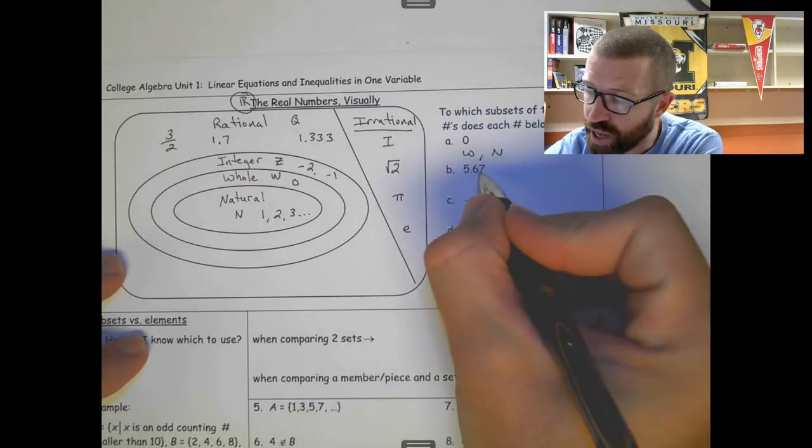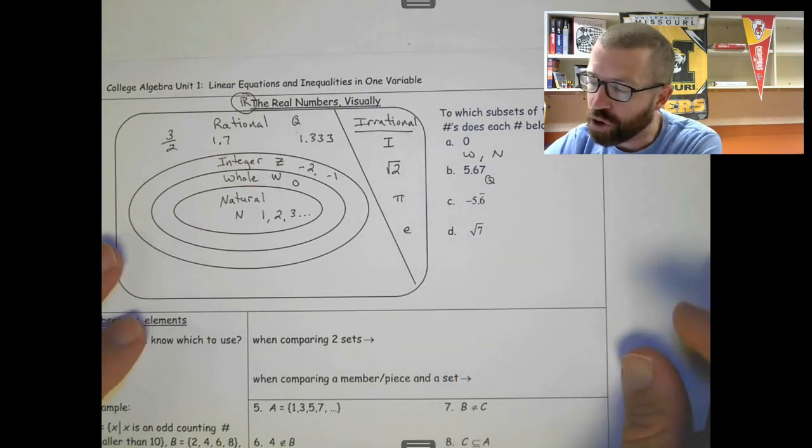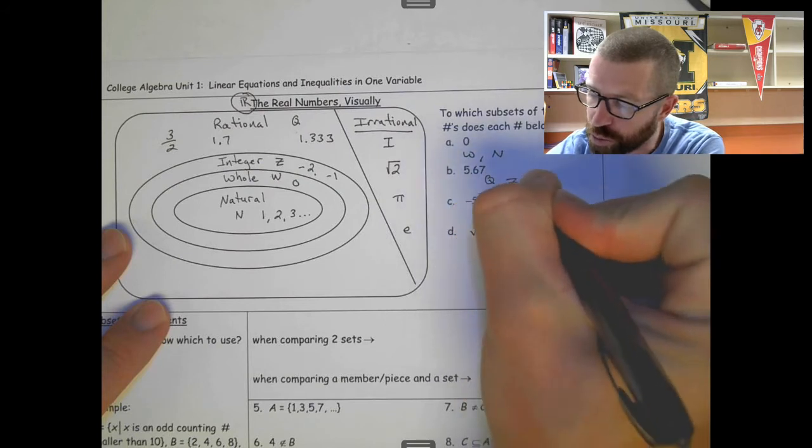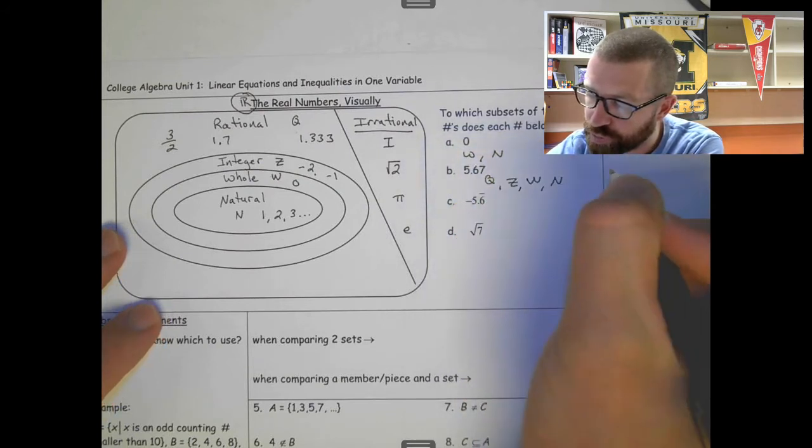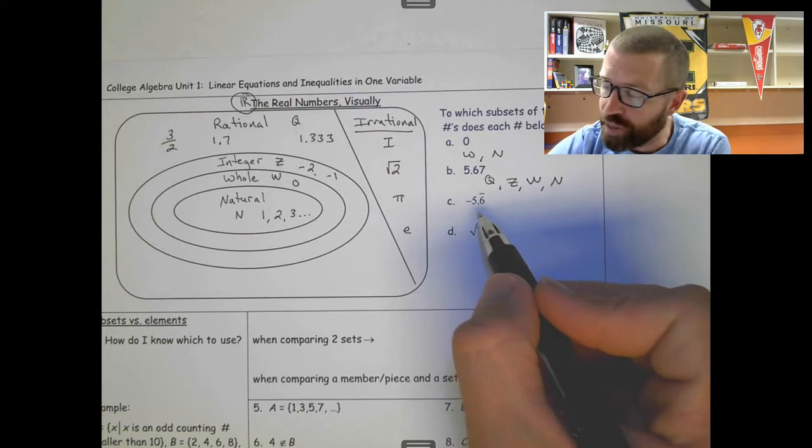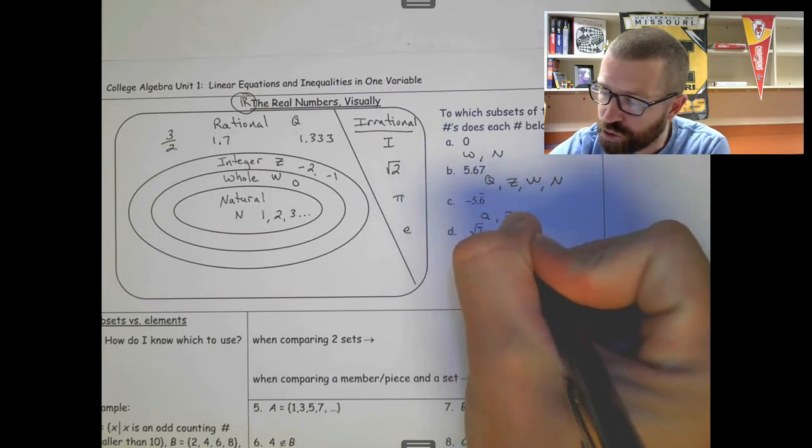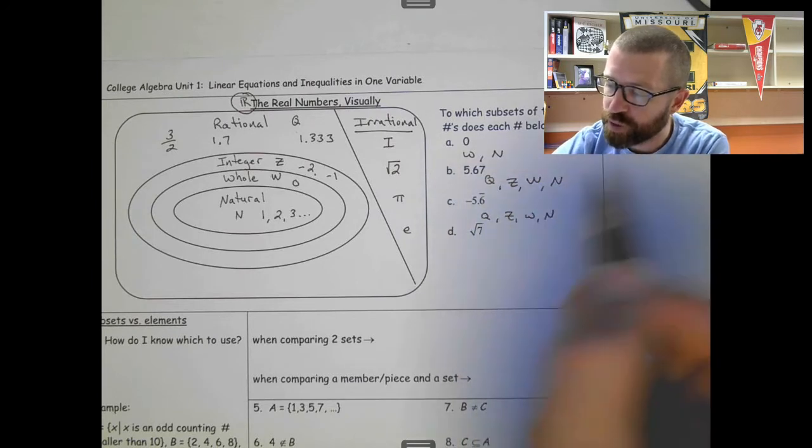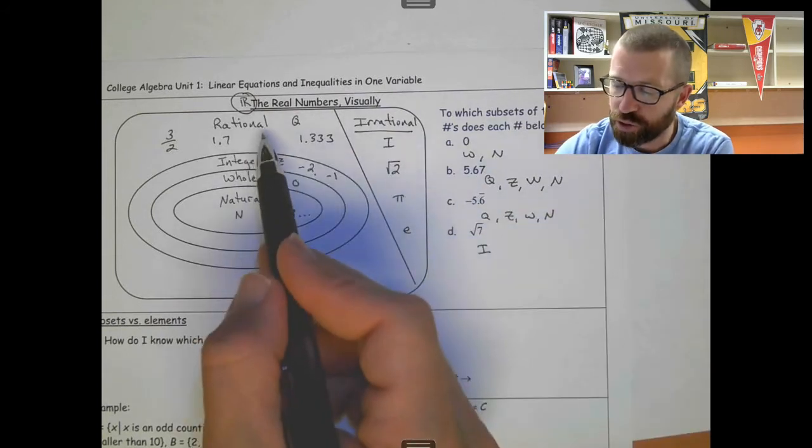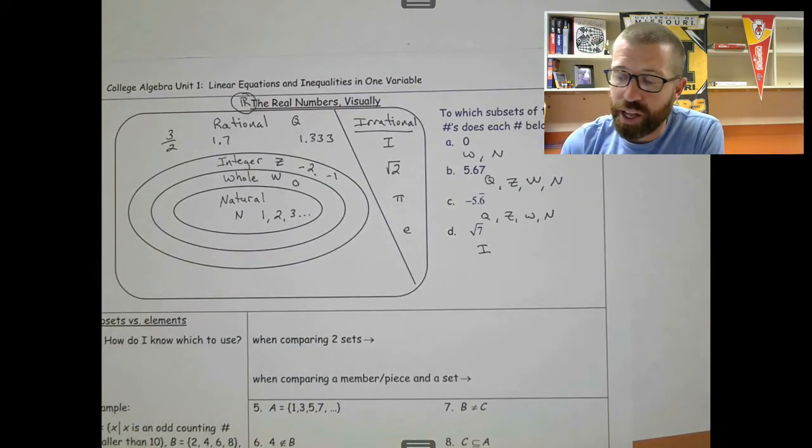5.67, that would be a rational number. It's a terminating decimal. And then it would also be everything that's inside of the rational number. So it's also an integer. It's also a whole number. And it's also a natural number. This negative 5.67 repeating, that falls in the same category as above, because it can be written as a fraction. So it's QZWN. And then square root of 7 is irrational, so that is just I. It's not rational. It's going to be either rational or irrational. You've got to pick one or the other. And then since it's irrational, it can't be an integer, whole, or a natural number.